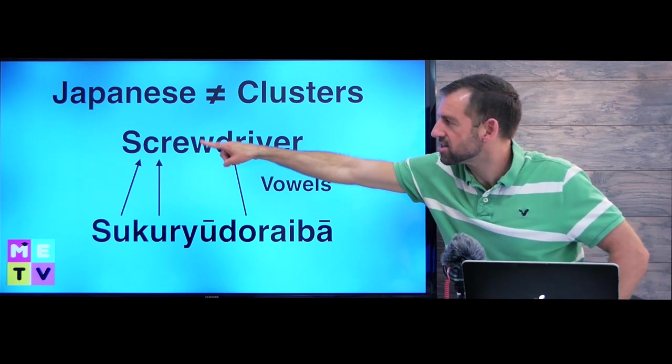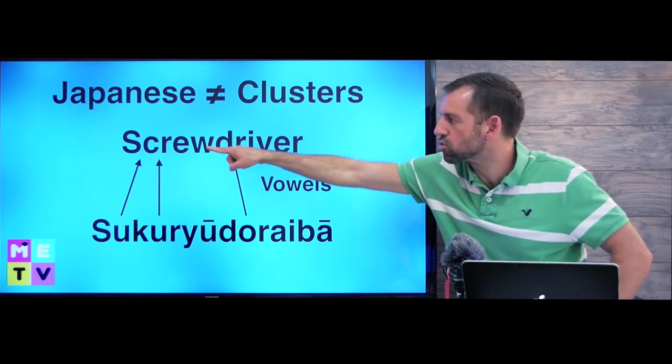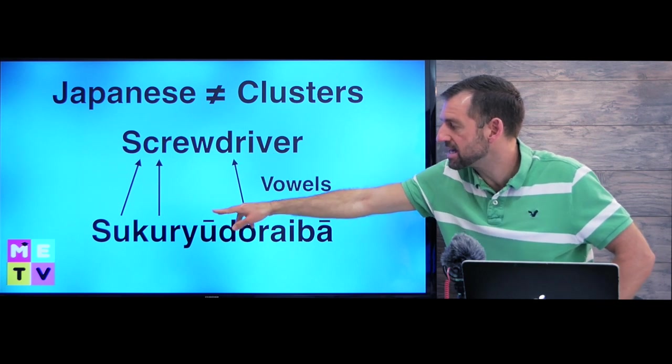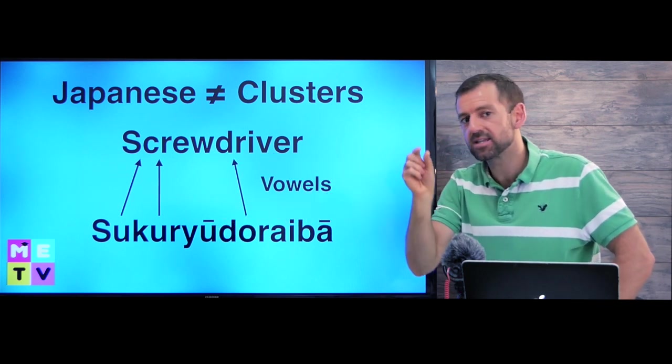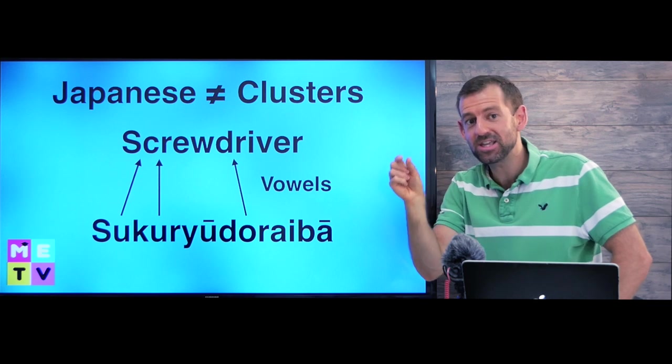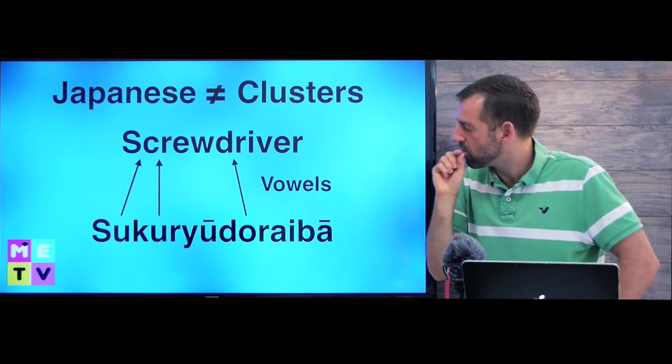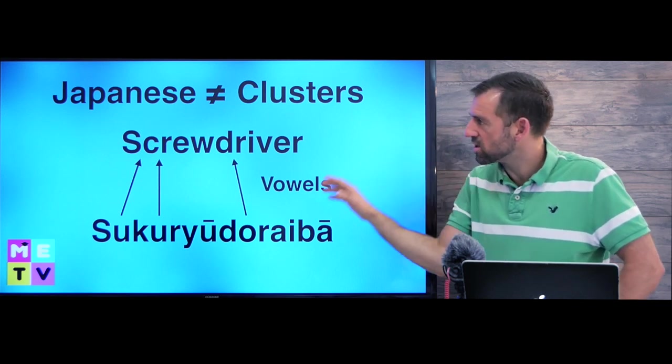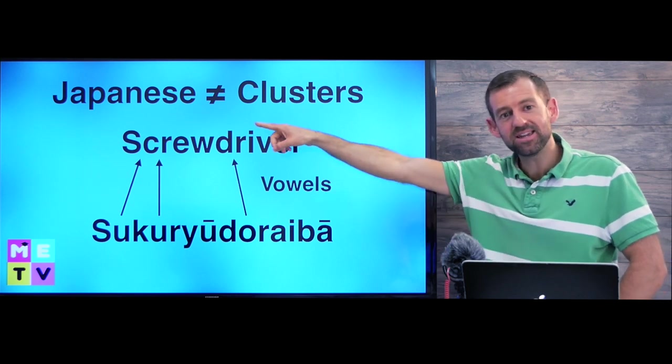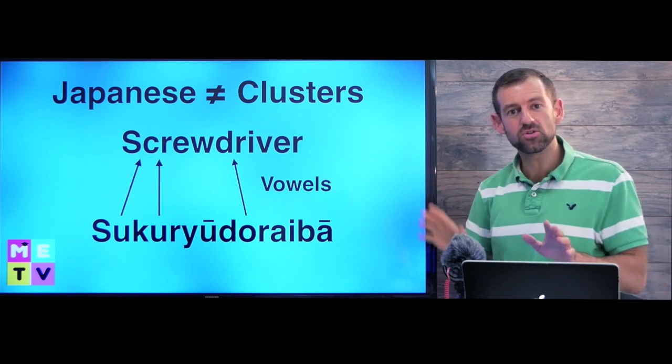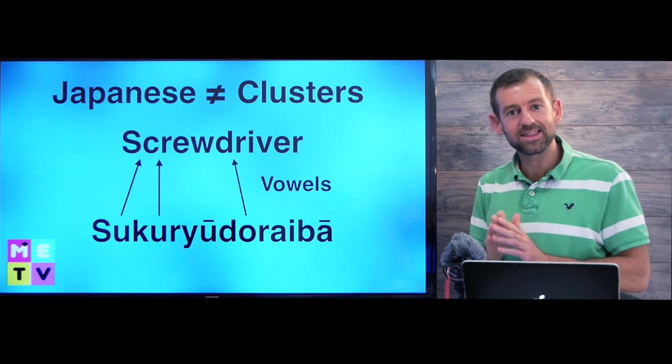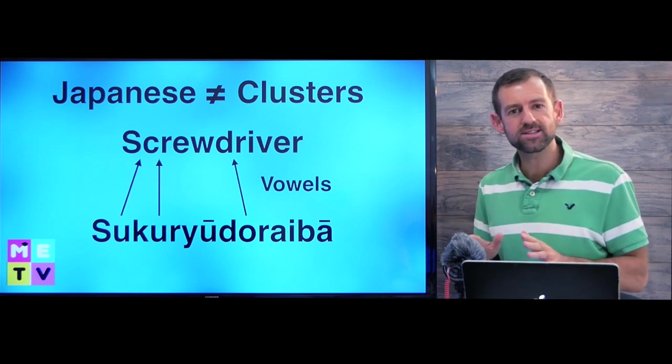Look, there's three consonants there. SCR. They're breaking it up by putting a vowel in between each of the consonants. Wow. So what does that tell you about Japanese? That tells you that in Japanese, they don't allow for consonant clusters. Isn't that interesting?